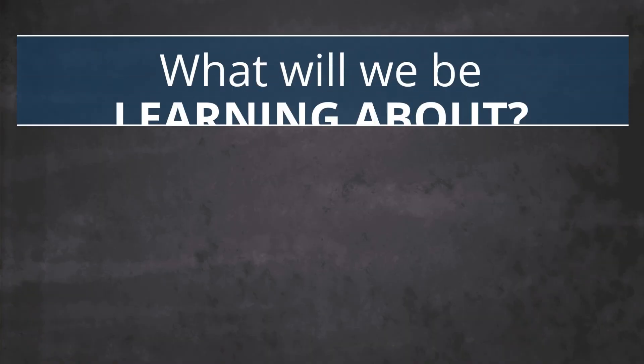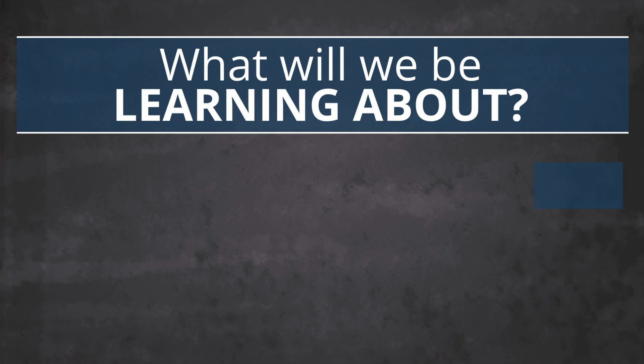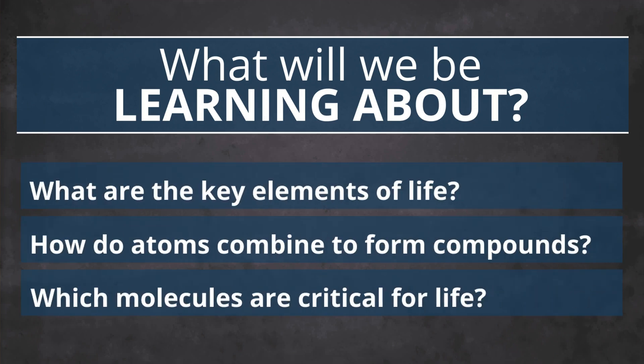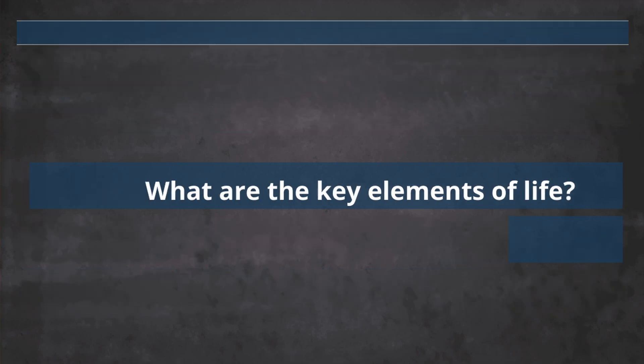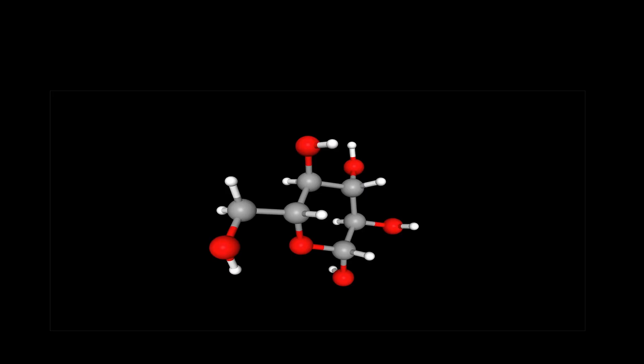Hi everyone, I'm Noel Poller, AP Biology teacher and author of The Lab Hamster Storylines. In this video, we will be exploring the elements of life. You'll learn how to describe the composition of the key biological molecules of life by learning how atoms can combine in different combinations to produce carbohydrates, proteins, lipids, and nucleic acids. Let's begin our exploration of the fundamental building blocks of life.